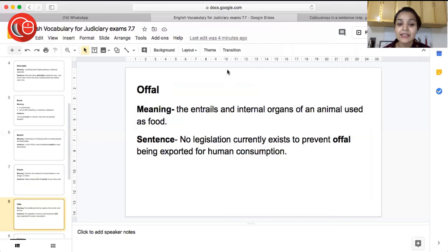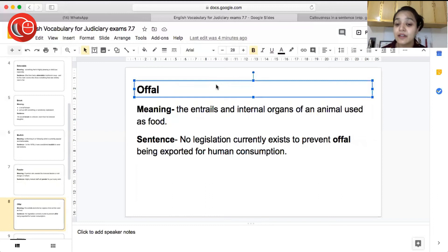So the next word is offal. Offal meaning the entrails and internal organs of an animal used as food. So the internal organs of an animal which are being eaten by humans, that is called offal. Sentence: No legislation currently exists to prevent offal being exported for human consumption. So there is no legislation which stops the export of internal organs of animals for human consumption.